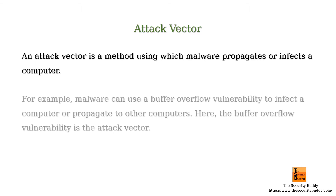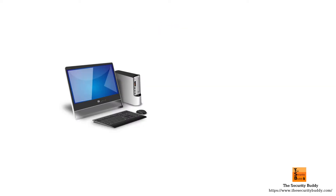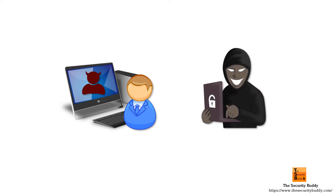For example, malware can use a buffer overflow vulnerability to infect a computer or propagate to other computers. The buffer overflow vulnerability is an attack vector. Malware often exploits vulnerabilities within a system to infect it, and sometimes attackers use phishing or other social engineering techniques to gain access and steal sensitive information. These are all attack vectors.